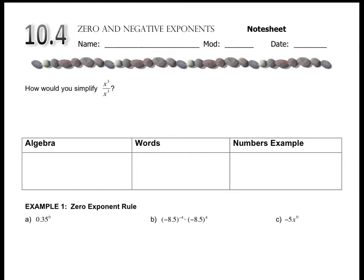Think back to your Mad Spam rules. How would you simplify x to the third divided by x to the third? Mad Spam says that when you divide, you subtract the exponents. So this would be x to the zero, because three minus three is zero.